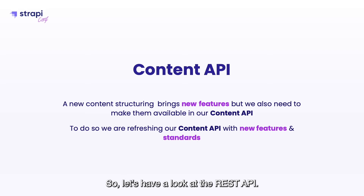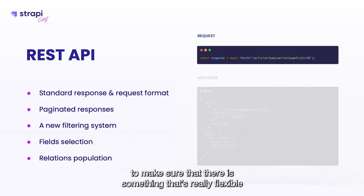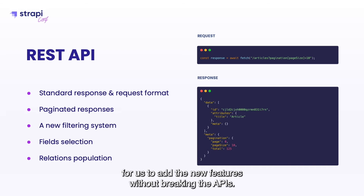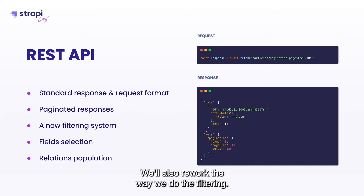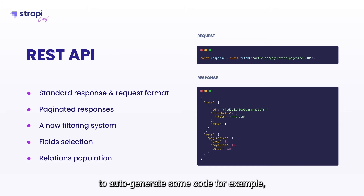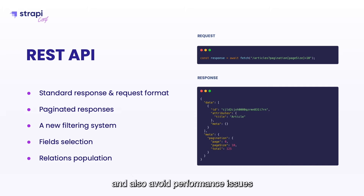On the REST API, the first thing we're going to do is standardize the response and request formats to make sure there is something flexible enough to add new features without breaking the APIs, and it will also be a good base for creating new SDKs. We'll add paginated responses and rework the filtering so you have a better API and can also use tools to auto-generate code. Two highly requested features are the selection of fields and the selection of relations, so you can control what fields you fetch and avoid performance issues by not fetching all relations when you don't need them.